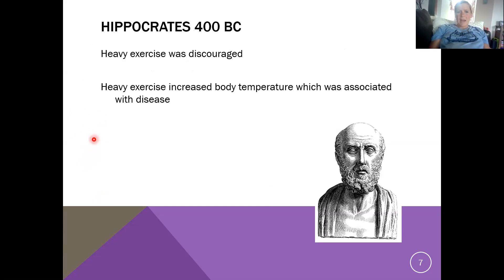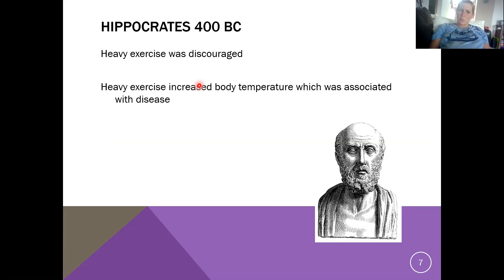What was happening around 400 BC? Heavy exercise was discouraged because heavy exercise increased body temperature, and an increase in body temperature — like having a fever — was associated with disease. So you could do light activities, but you weren't encouraged to do anything where you would really get your body temperature up too much. That makes sense given what was understood about disease at that particular time.